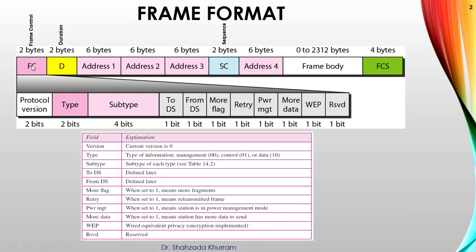First one is FC, frame control. It's basically two bytes, we will discuss in detail later. Second is D for duration. Duration means it's used for carrier sensing.